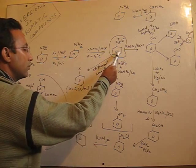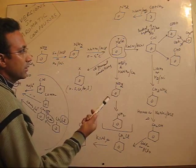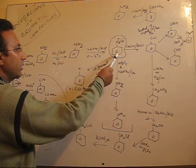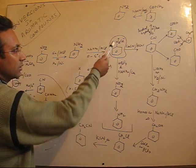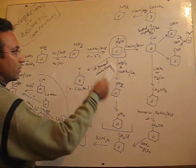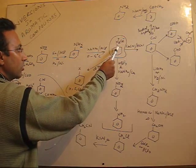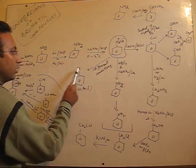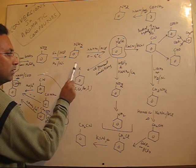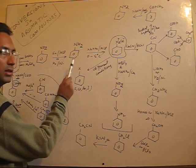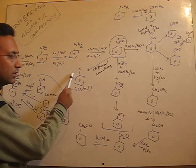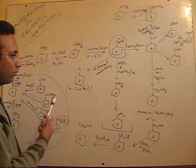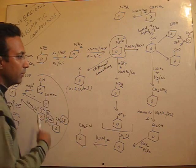Diazonium salts — we have already discussed the reactions, so I am just summarizing without mentioning all the conditions. Diazonium salts can be converted to chlorobenzene, fluorobenzene, bromobenzene, and iodobenzene under different conditions, which we have already discussed.